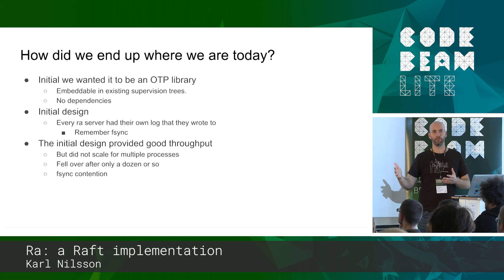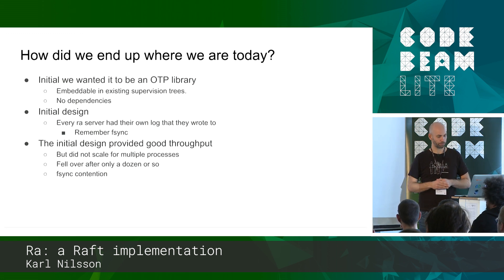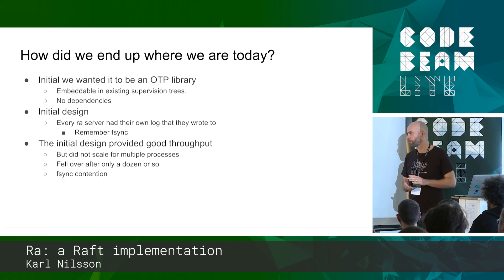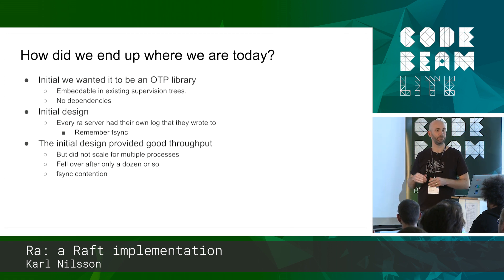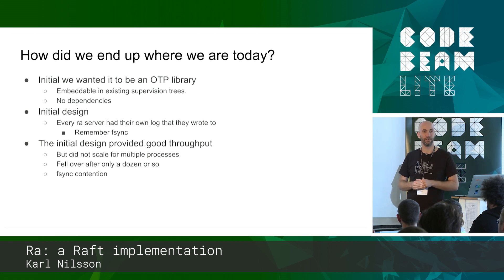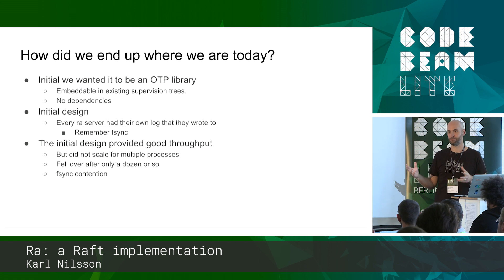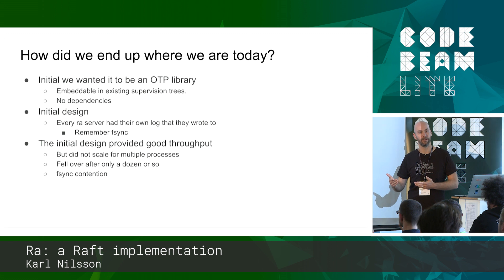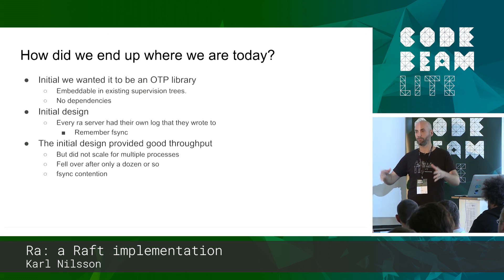Initially we wanted it to be an OTP library so we could embed it in an existing supervision hierarchy. In the initial design every Ra server had its own log file. It was the simplest first-cut implementation and provided reasonable throughput, but only if you ran a single server on every Erlang node. Once you scaled up and ran even just a dozen servers, it started falling over and ground to an extreme halt. That was pretty much all down to fsync contention. Every time we get a command we need to fsync - it needs to be on disk before we can apply it to the state machine - and all these Ra servers were all fsyncing to the same disk volume, causing contention.